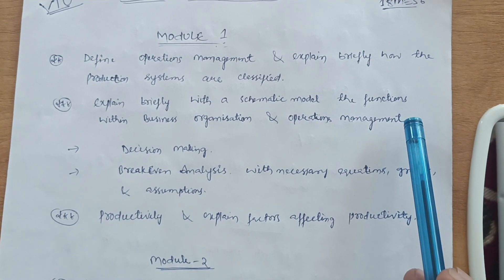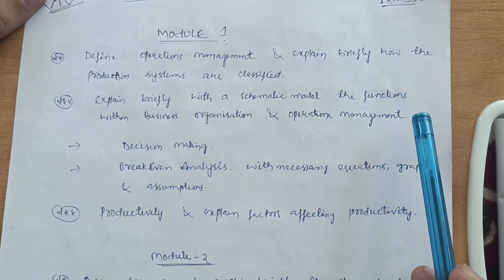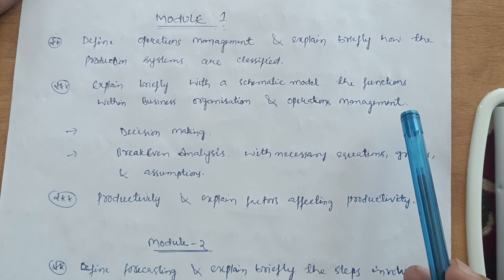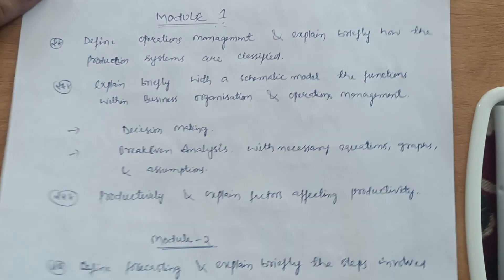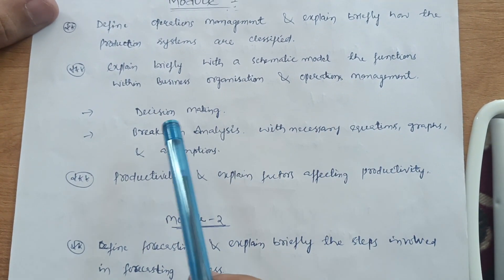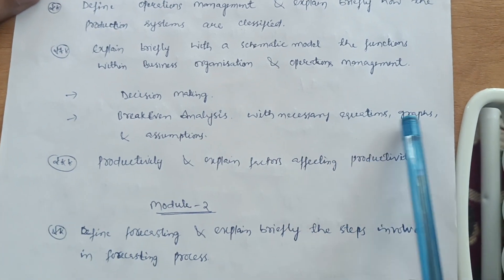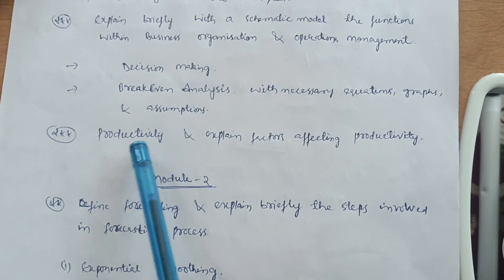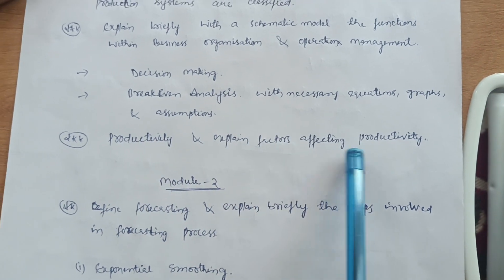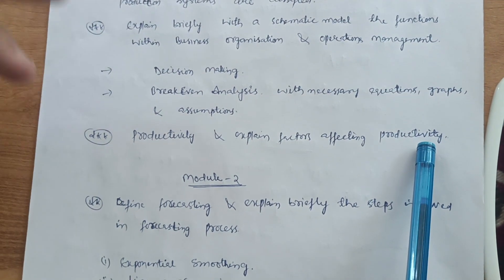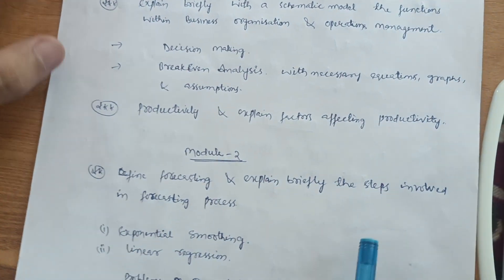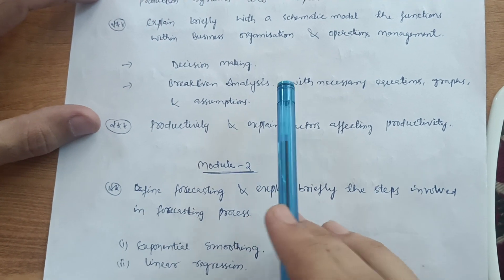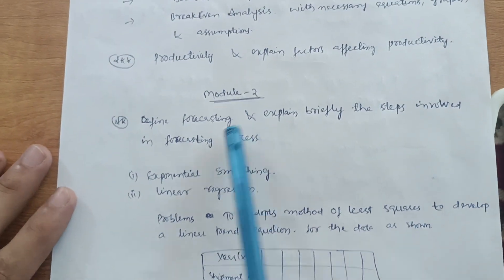Try to focus on the theory part — if you have a group, you can discuss in the group in whatever language is most convenient for you. The next questions in Module 1 are: what is decision making, what is break-even analysis with necessary equations, graphs, and assumptions, and also productivity and the factors affecting productivity. This much content is enough to score in Module 1 — you can easily score 20 marks by focusing on the theory part.